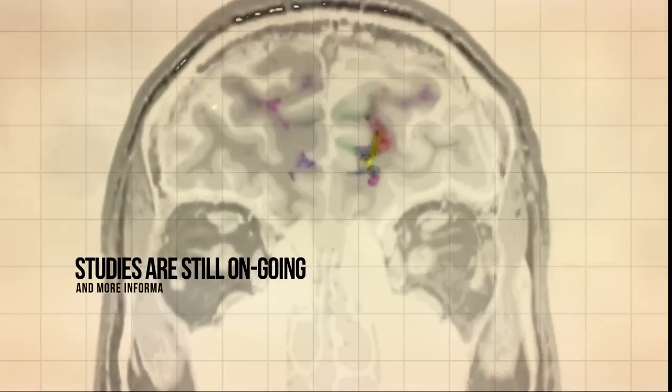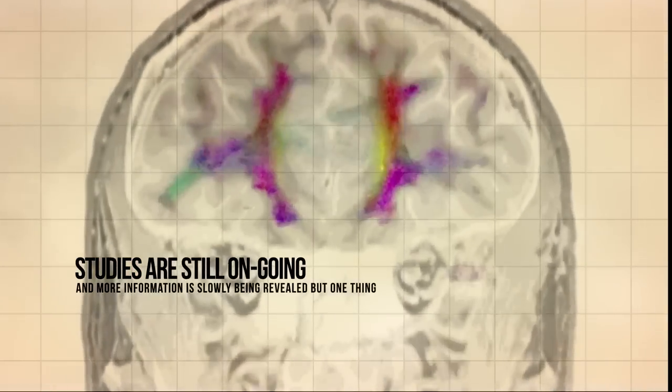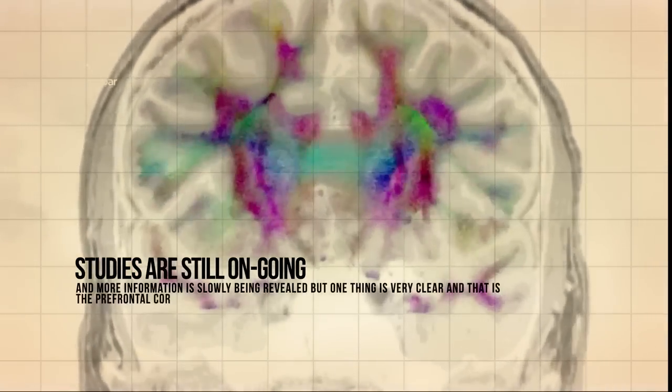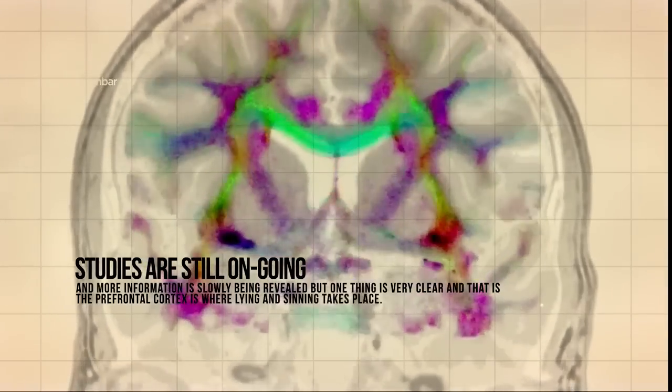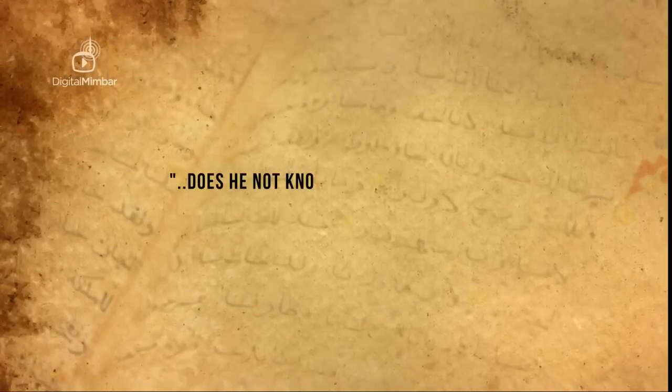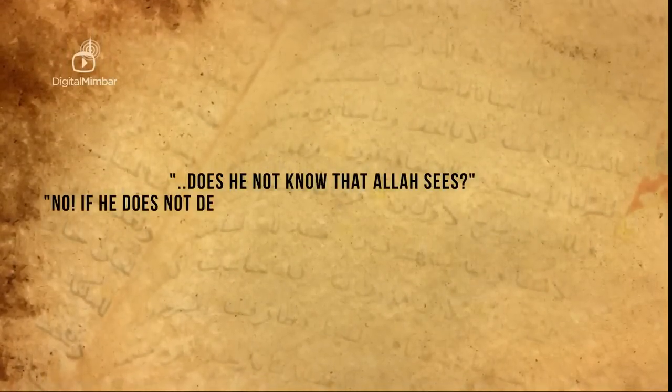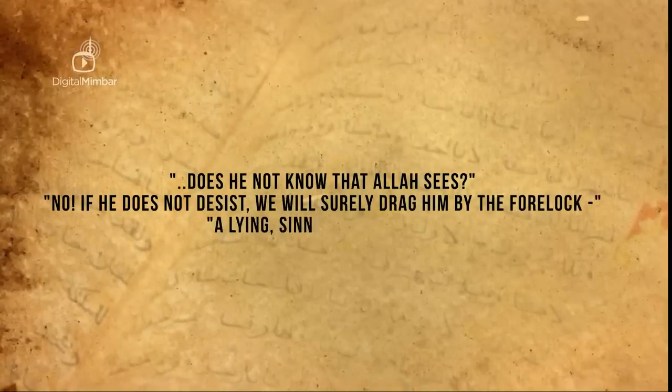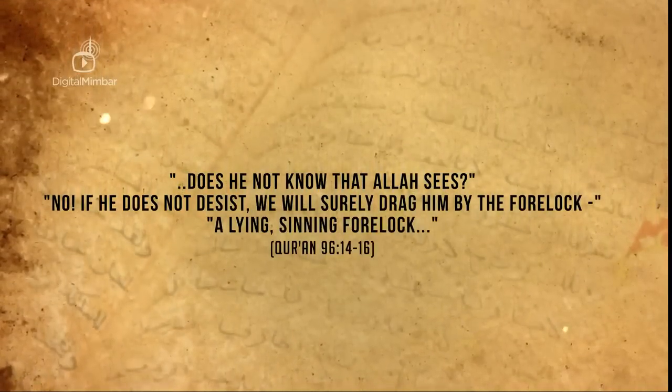Studies are still ongoing, and more information is slowly being revealed, but one thing is very clear, and that is the prefrontal cortex is where lying and sinning takes place. "Does he not know that Allah sees? No, if he does not desist, we will surely drag him by the forelock, a lying, sinning forelock."